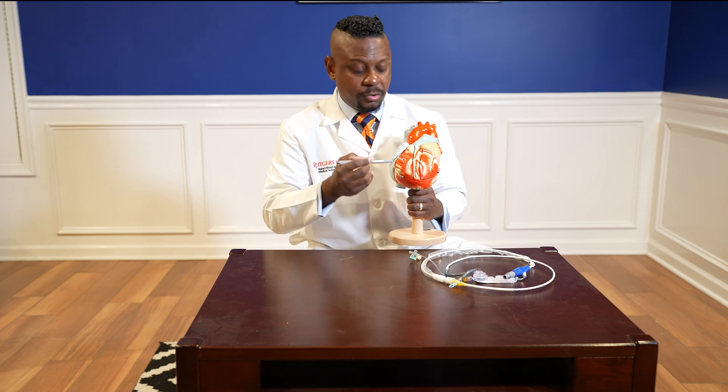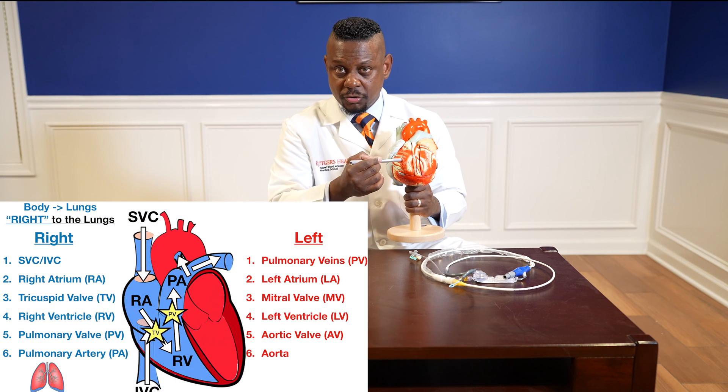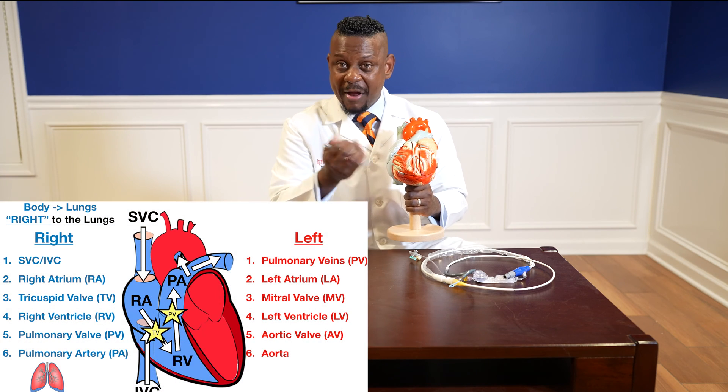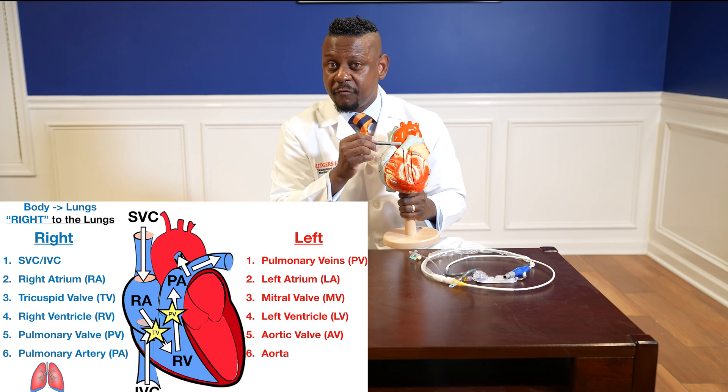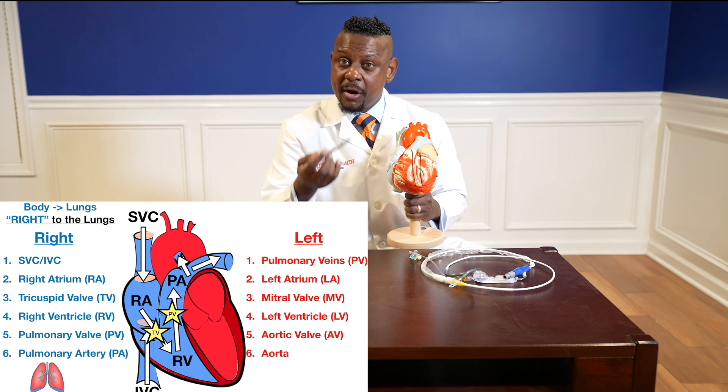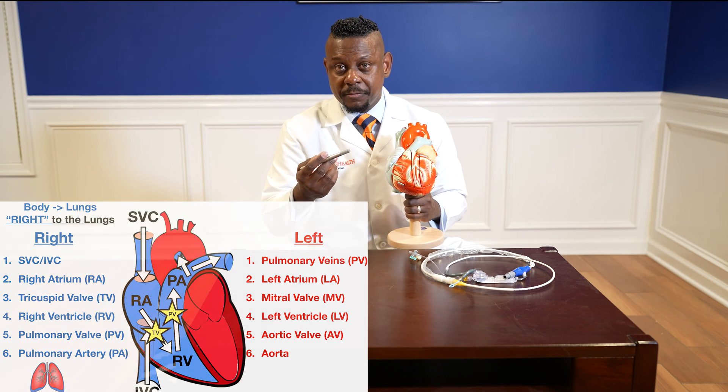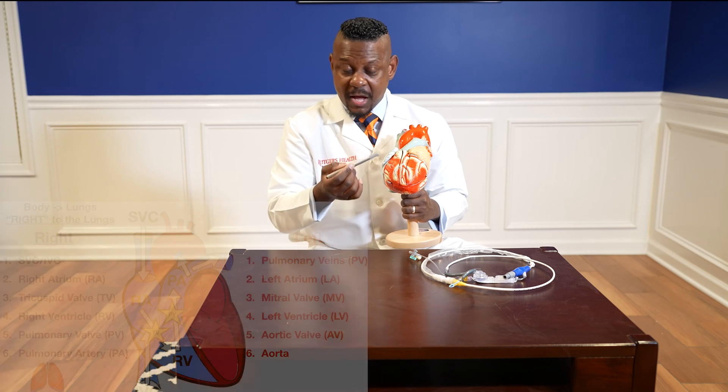This is a model of the heart. I like to think of the heart in terms of sides. This is the right side — right atrium, right ventricle — and this is the left side — left atrium, left ventricle. On the right side, blood will classically go from the right atrium to the right ventricle. The right ventricle will squeeze and push blood to the pulmonary artery, which carries blood to the lungs.